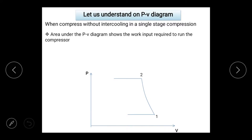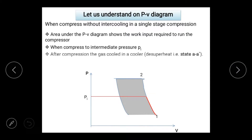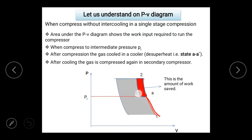On the P-V diagram, stage 1-2 compresses from evaporator pressure to condenser pressure in a single stage — the area under the P-V curve shows the work done. If we instead use intermediate pressure with intercooling, compressing in two stages with intercooling in between, the saved area under the P-V diagram represents the work saved. This saved work means COP will be increased. However, the additional work input for intercooling must also be accounted for.